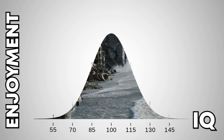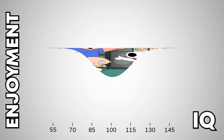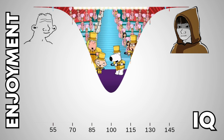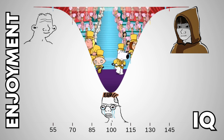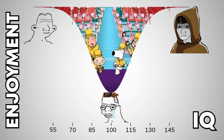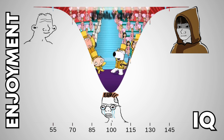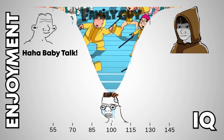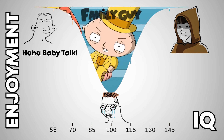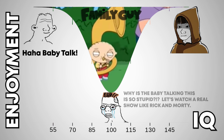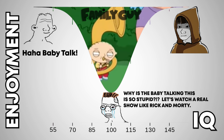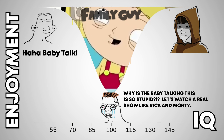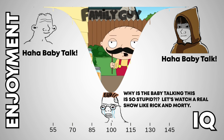Something even more fascinating happens when the bell curve is reversed. Now it is describing something that low IQs and high IQs love whereas the midwits can't stand. For instance, this reverse bell curve perfectly describes Family Guy. Low IQs love it because haha baby talk. The midwits hate it — why is this baby talking? It's so stupid. Let's watch a real show like Rick and Morty. High IQs love it because haha baby talk.